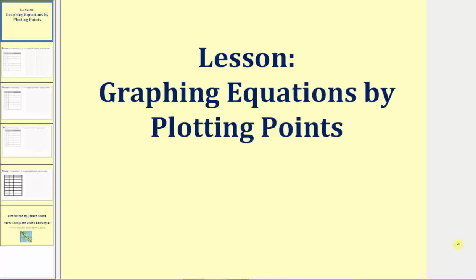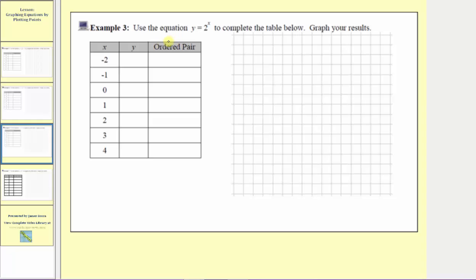Welcome to part three of the lesson on graphing equations by plotting points. In example three, we're asked to use the equation y equals two raised to the power of x to complete the table below and then graph the results. Notice how we're given the inputs or x values; we need to find the corresponding outputs or y values using the given equation.